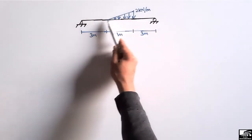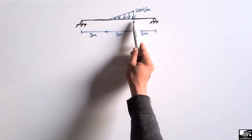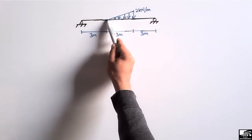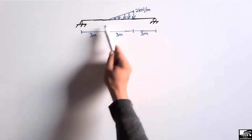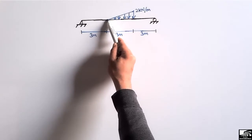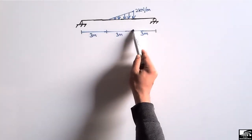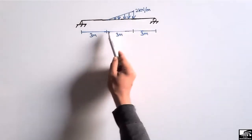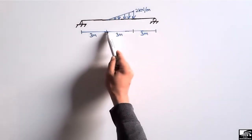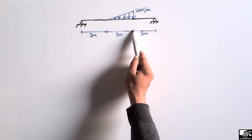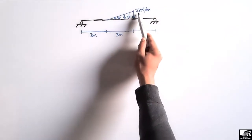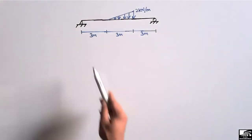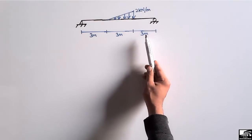This triangular load acts at the center of the beam. The triangular load starts from a position at 3 meters with zero magnitude and ends at a distance of 6 meters from the support. The total length of the load is 3 meters and the maximum magnitude of the load is 2 kilonewton per meter.